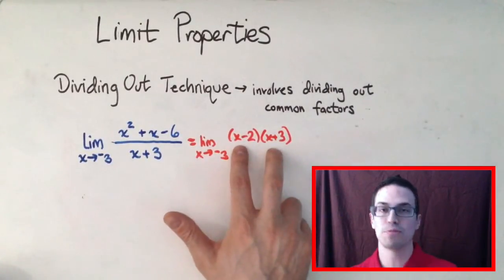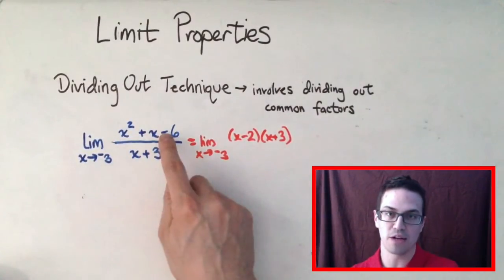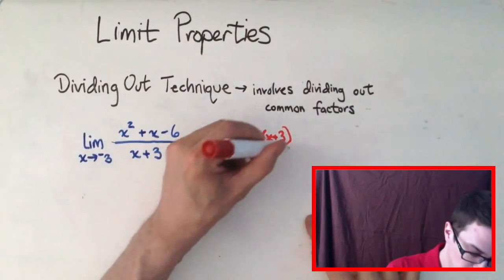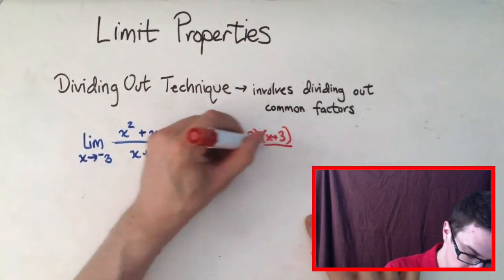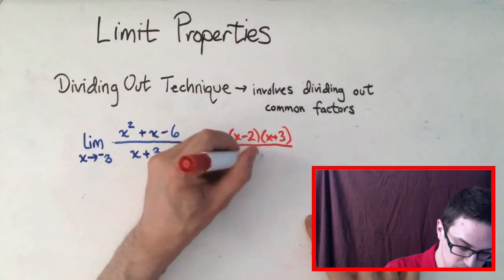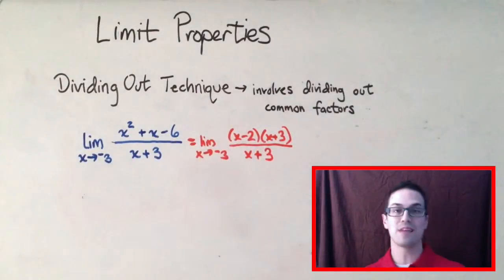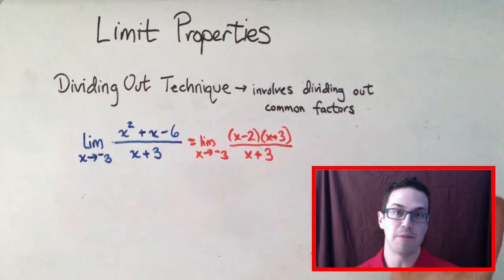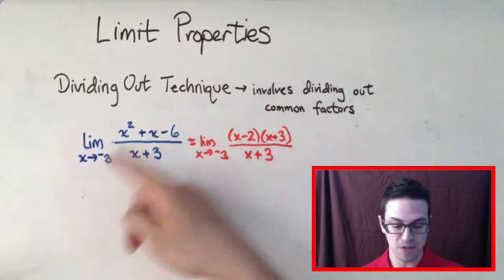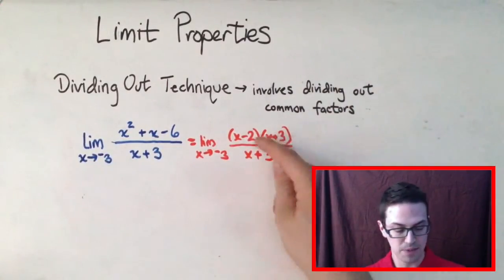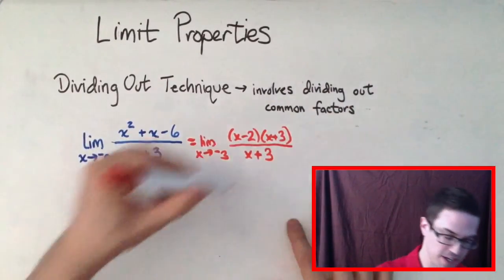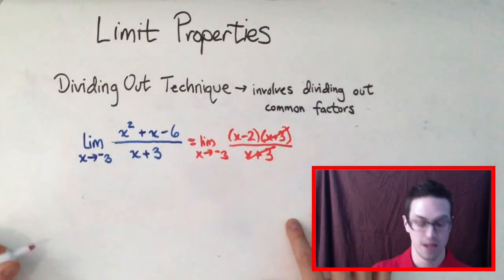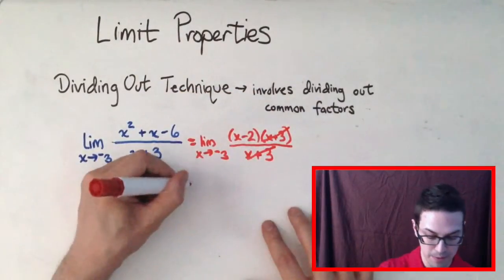If you multiply those two numbers together, you get the original quadratic. Then we're dividing by x plus three. The next step is to divide out the common factors — that's why it's called the dividing out technique. So x plus three divided by x plus three cancels to one over one. Now I'll rewrite this as the limit as x goes to negative three of x minus two.